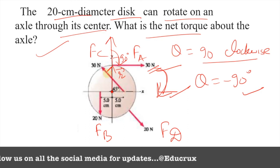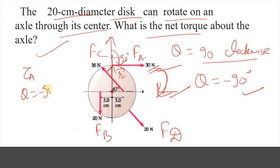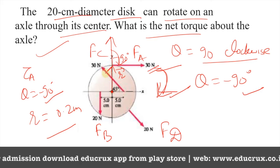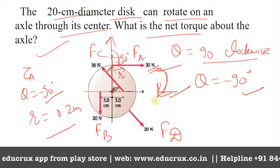For torque A, the angle is minus 90 degrees. And r is 0.2 meters.